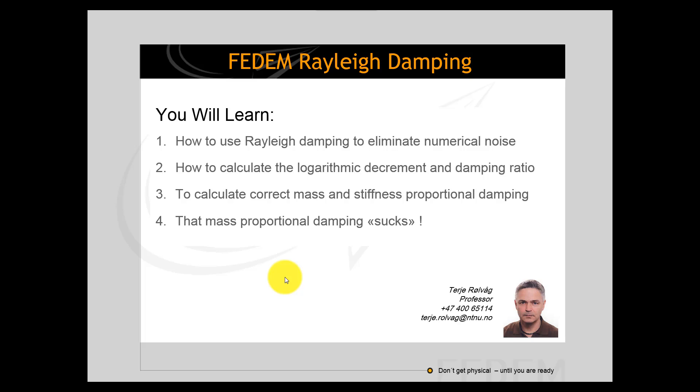Then I will show you how you can calculate the logarithmic decrement and damping ratio for a given mode shape and frequency based on measurements. And then based on those damping ratios for two different vibration modes you can calculate the correct mass and stiffness proportional damping, and I will also tell you why mass proportional damping literally sucks sometimes.